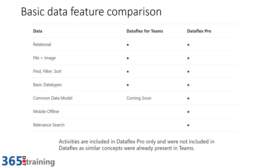Looking at comparisons between Dataflex and Dataflex Pro: basic data types, basic relationships, parent-child records, and lookup fields are available in both. File and image support — for apps where users upload images or documents — is also available in both. However, features like mobile offline and relevant search are Dataflex Pro features. If your application needs to support offline users, you would simply upgrade to Dataflex Pro to gain that support.